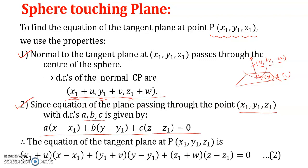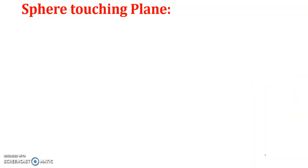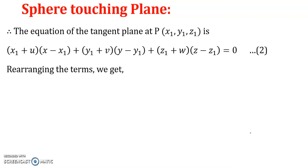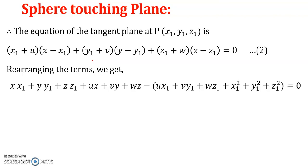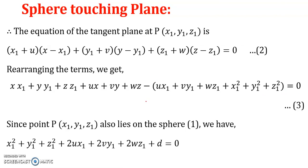Therefore, the equation of the tangent plane is: (x₁+u)(x−x₁) + (y₁+v)(y−y₁) + (z₁+w)(z−z₁) = 0. Rearranging and simplifying this equation, we get: xx₁ + yy₁ + zz₁ + ux + vy + wz − (ux₁ + vy₁ + wz₁) + x₁² + y₁² + z₁² = 0. We denote this as equation number 3.